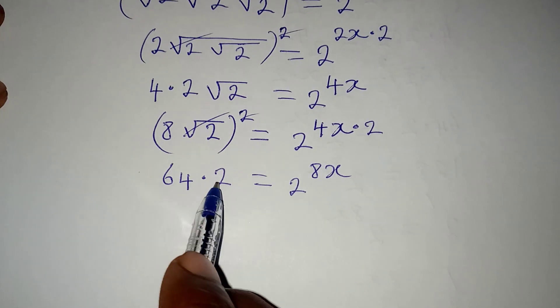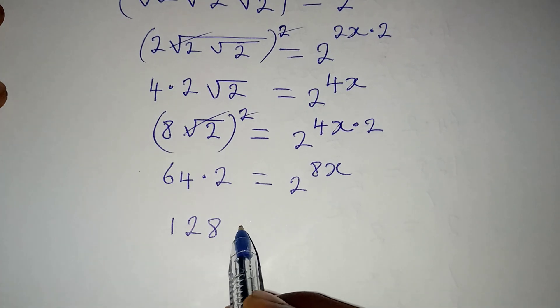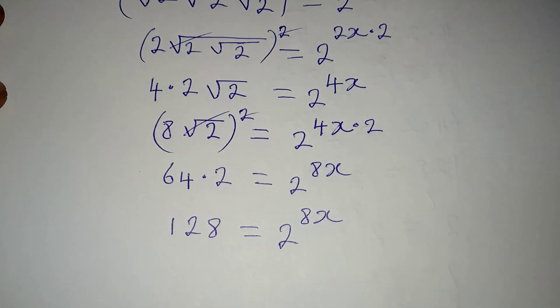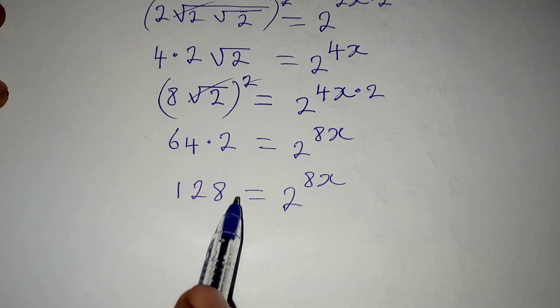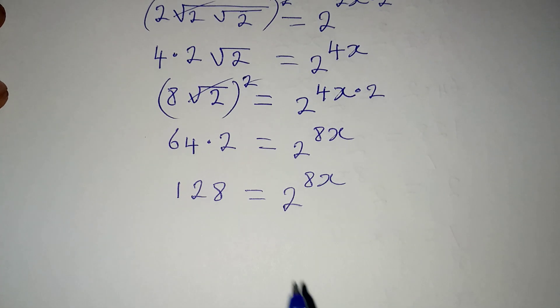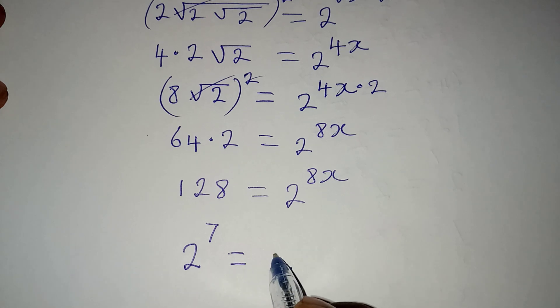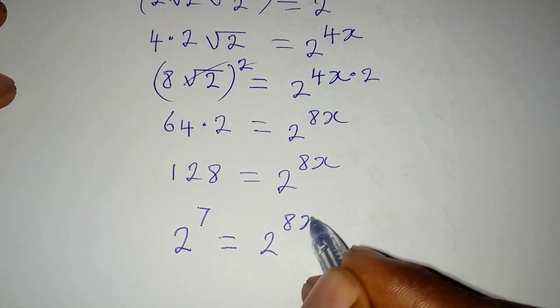Now, I will multiply this to get 128, which is equal to 2 to the power of 8x. Now, what am I supposed to do? I have to write 128 in index form, because this is the same thing as 2 to the power of 7, which will now be equal to 2 to the power of 8x.